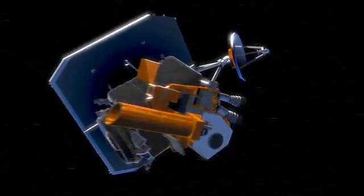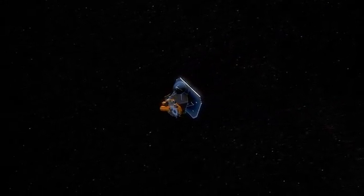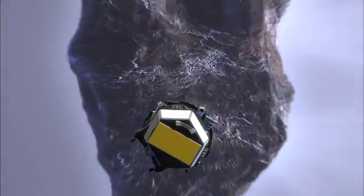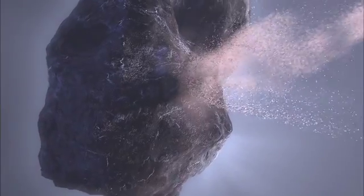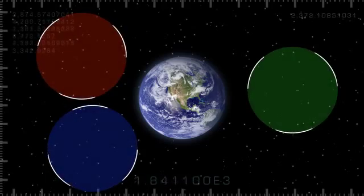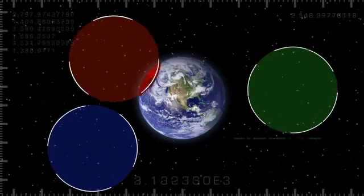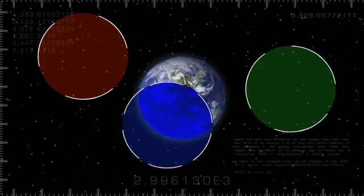Well it turns out they can. Remember the Deep Impact mission, the NASA spacecraft that slammed a probe into a comet in 2005? Well now it's headed for another comet. While on its way, we used its instruments to study the amount of red, green, and blue light reflected by Earth, the Moon, and Mars.